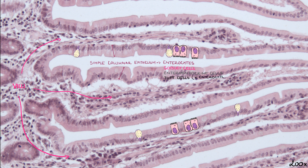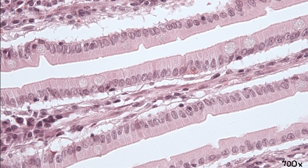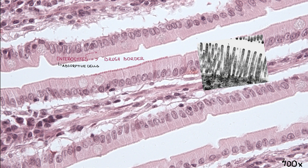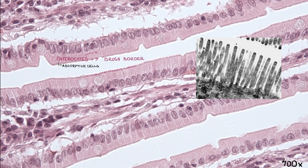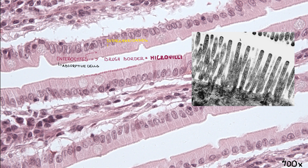We can only distinguish enterocytes from tuft cells using electron microscopy. The most abundant population of cells are enterocytes — the absorptive cells creating a striated or brush border on their apex. When viewed with the electron microscope, the brush border is seen to be a layer of densely packed microvilli. Disaccharidases and peptidases synthesized by enterocytes are bound to the microvilli and hydrolyze disaccharides and peptides into monosaccharides and amino acids. Microvilli also contain aminopeptidases and alkaline phosphatases. All these enzymes are embedded in the membrane as integral membrane proteins and are part of a structure called the glycocalyx.